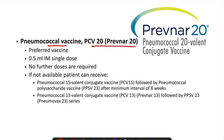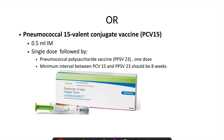If PCV20 is not available, we can go for vaccination with PCV15 followed by PPSV23, or PCV13 followed by PPSV23. In the case of PCV15, one dose of 0.5 ml intramuscularly is recommended, but this single dose should be followed by the PPSV23 vaccine. The minimum interval between the PCV15 and PPSV23 vaccines should be at least 8 weeks.